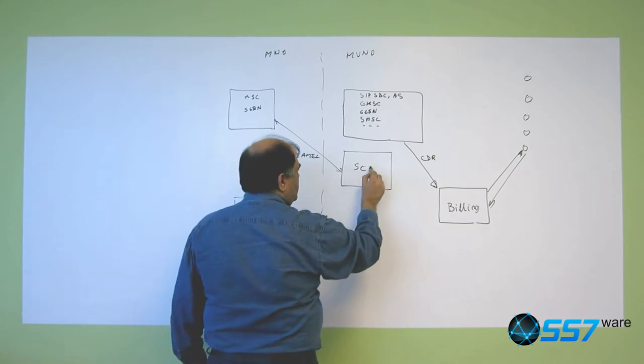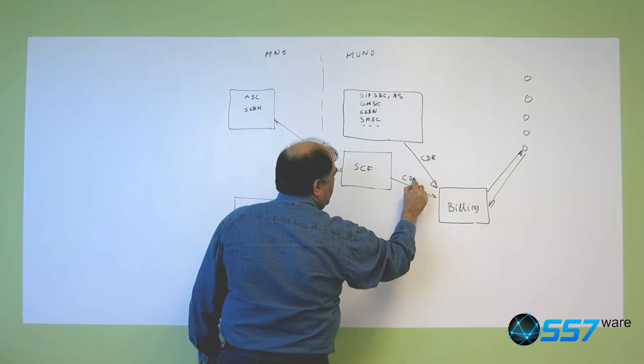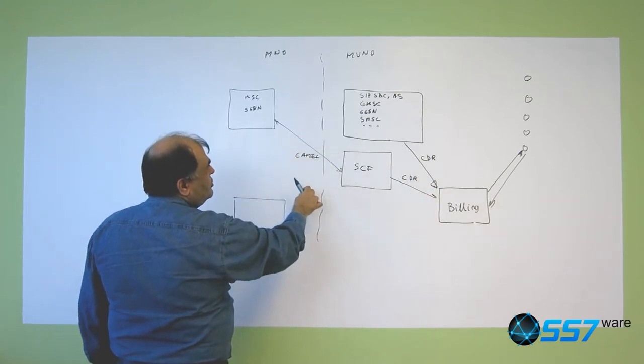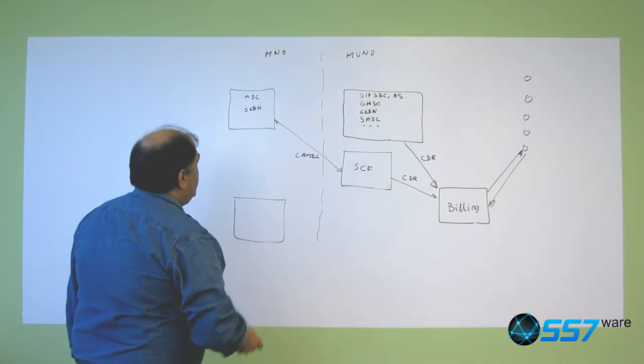And here we have a service control function that builds CDRs for services that potentially don't go through the home network at all. Besides that,